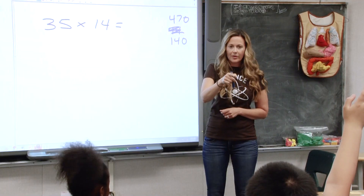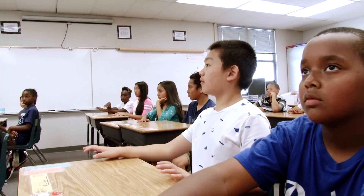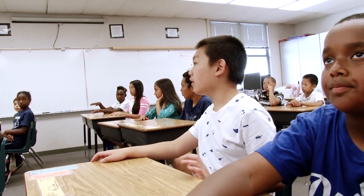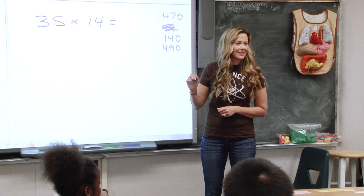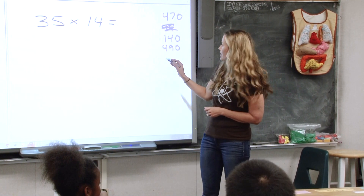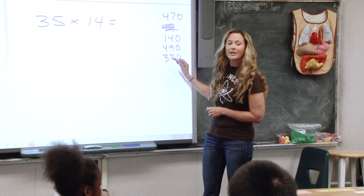I noticed this year we've had a little bit of a struggle with two-digit by two-digit multiplication. What do you think, Jen? 490. 490? Dora? 320. Wow, we have lots of different numbers. 320.